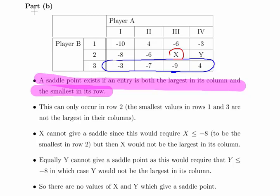So X cannot give a saddle point because this would require X less than or equal to minus 8 to be the smallest in row two. But that would mean it is not the largest in its column.